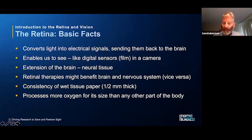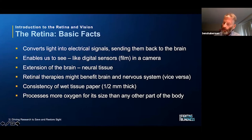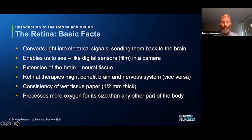The retina is a very thin piece of tissue — only a half a millimeter thick — and has the consistency of wet tissue paper, so it's very fragile. Yet very impressively, the retina processes more oxygen for its size than any other part of the body, including the heart, the lungs, and the brain. So it's a real workhorse. There are a lot of functions it's performing, and it's performing these functions all the time — 24/7. Our retinas are not only busy when we're looking at things, but they're also doing important functions at night, which we'll talk about later in this presentation.